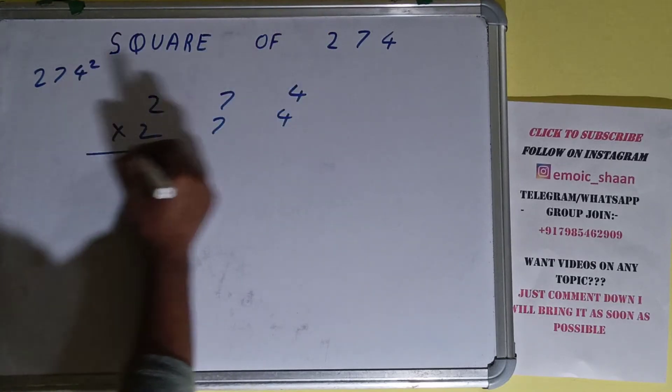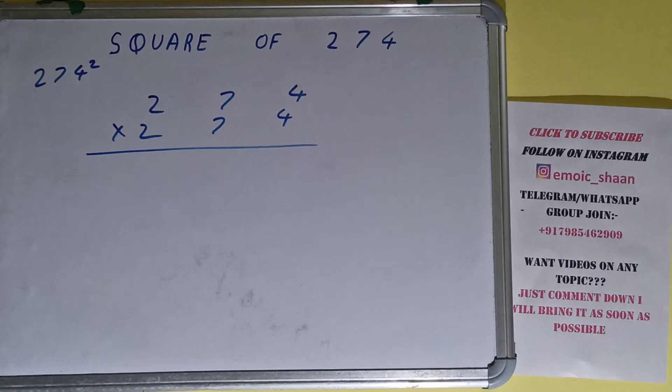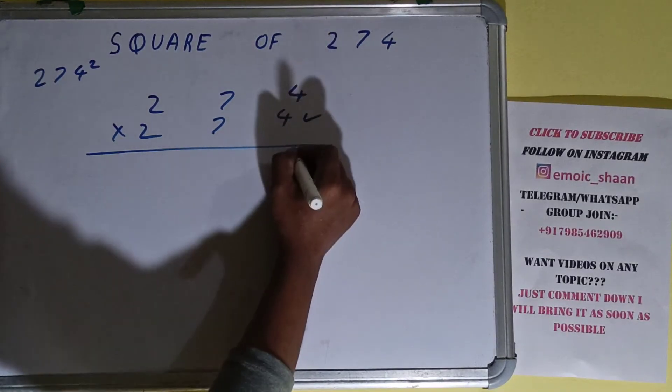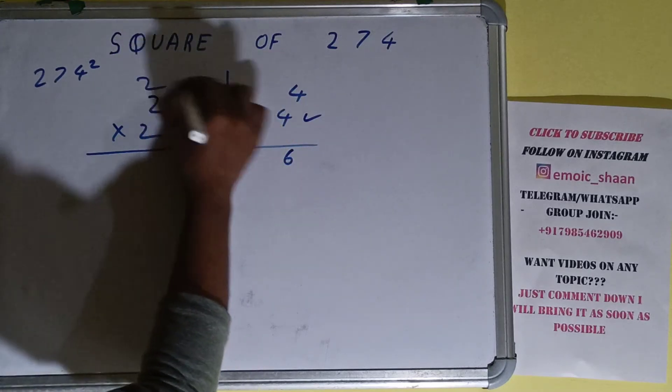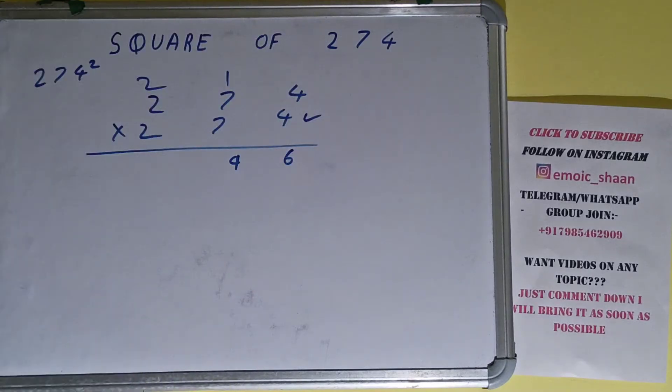So let's begin with this. 4 times 4 is 16, 1 carry. 7 times 4 is 28 plus 1 is 29, 2 carry. 4 times 2 is 8 plus 2 is 10.